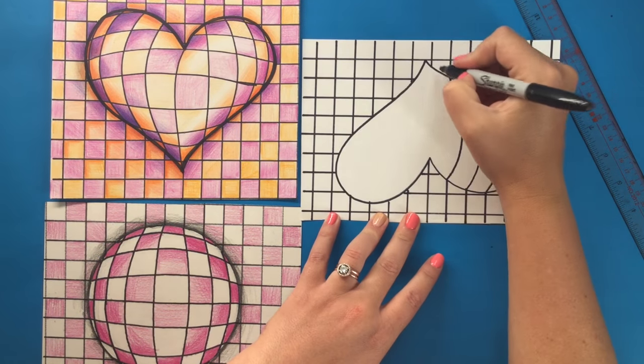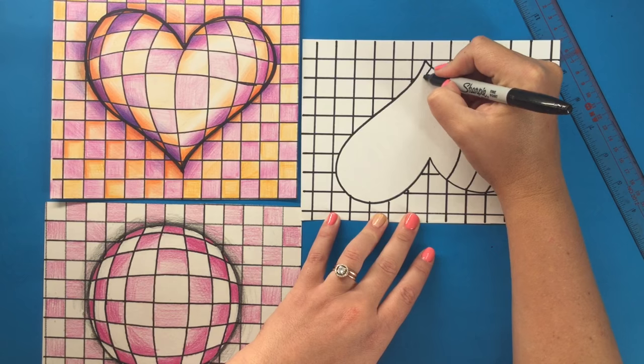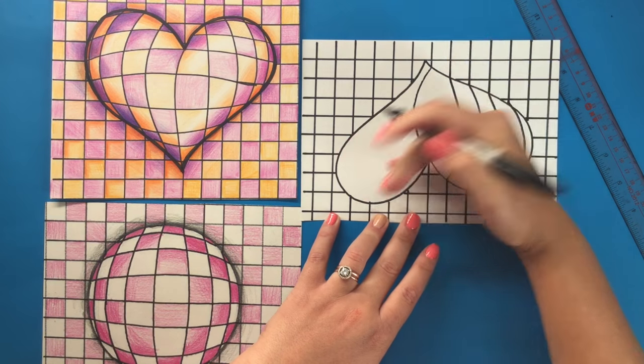So we take our line from this side and curve it to meet on the other side in the opposite direction.